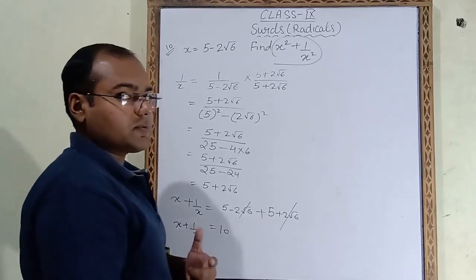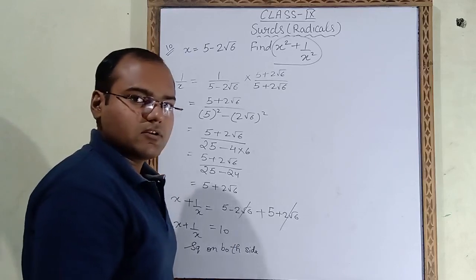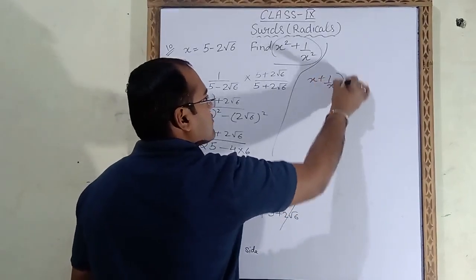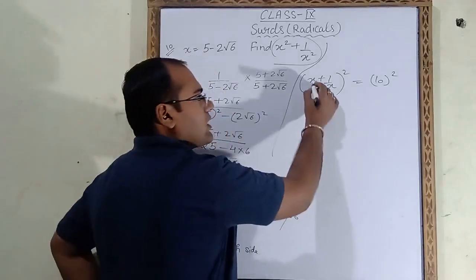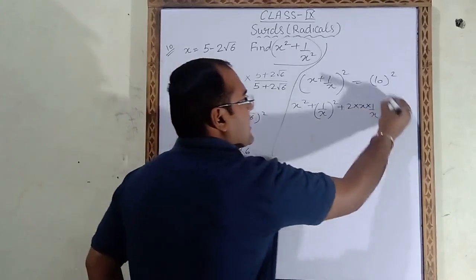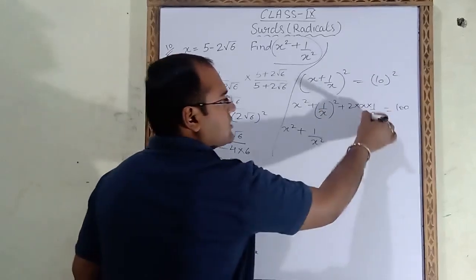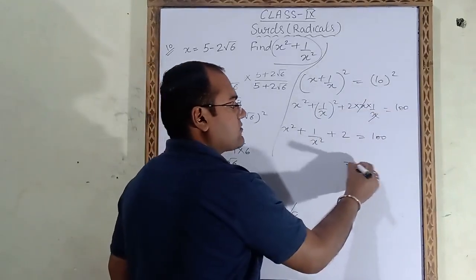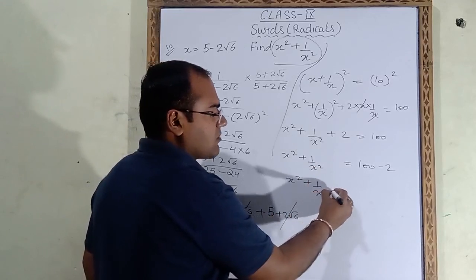Now square both sides: (x + 1/x)² = 10². Using (a + b)² = a² + b² + 2ab: x² + 1/x² + 2 = 100. So x² + 1/x² = 100 − 2 = 98. The final answer for x² + 1/x² is 98.